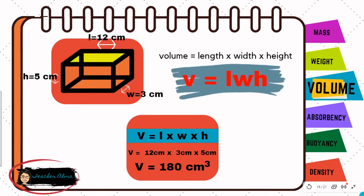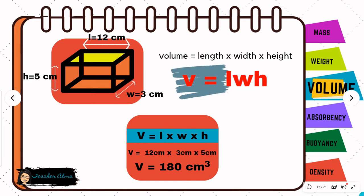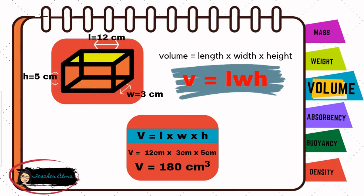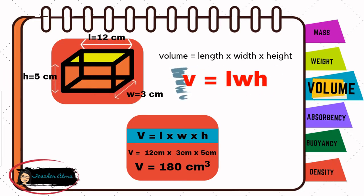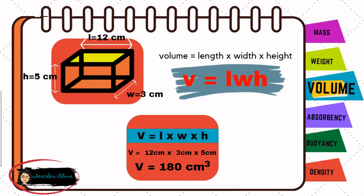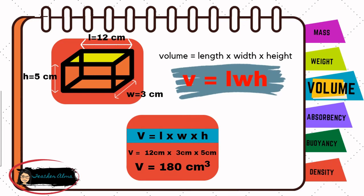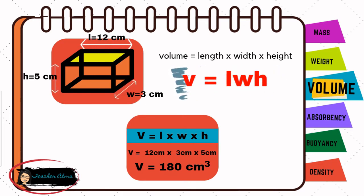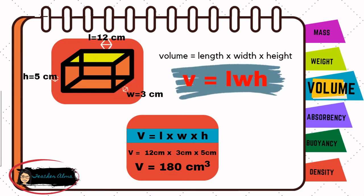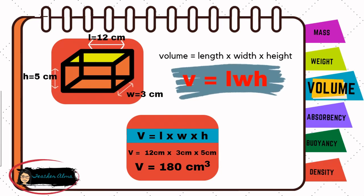If the measurements are in meters, the unit of volume is cubic meters. All measurements must be in the same units to calculate volume. Other regular solids, such as spheres and cylinders, also have formulas for calculating volumes.